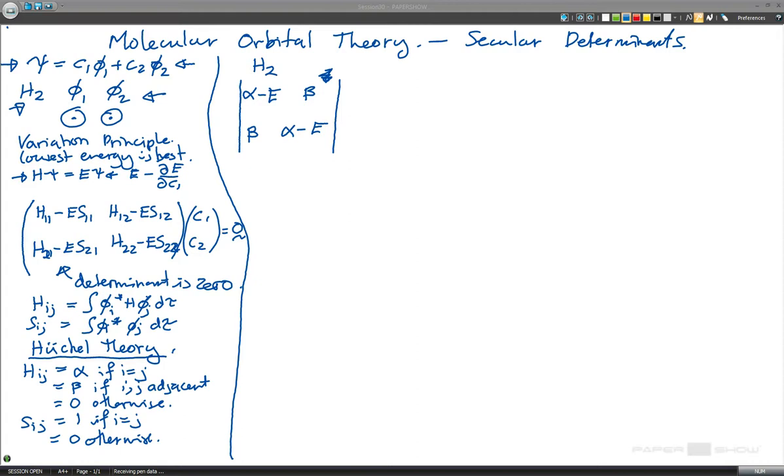And what we can do is solve this. We know that the determinant is equal to zero. It must be equal to zero because of this equation we have here on the left. But before we solve that, what we're going to do is divide by beta in the matrix and make it look like this. And here, x is equal to alpha minus e over beta.